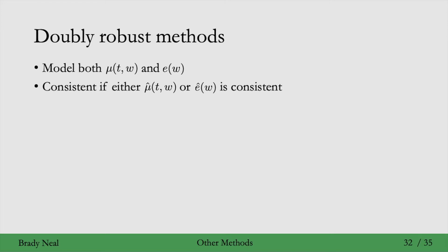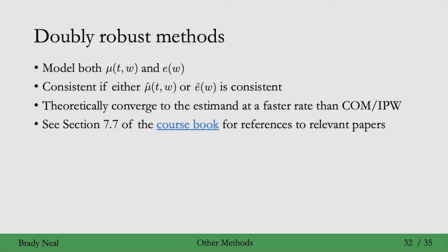Another property of doubly robust methods that is really cool is that they will theoretically converge to the estimand at a faster rate than COM or IPW estimation. You might interpret this as that doubly robust methods are more efficient with data, but these theoretical results are usually in the asymptotic regime where we have infinite data. So really, for finite samples, it's a bit unclear. You can check out section 7.7 of the coursebook for references to relevant papers.